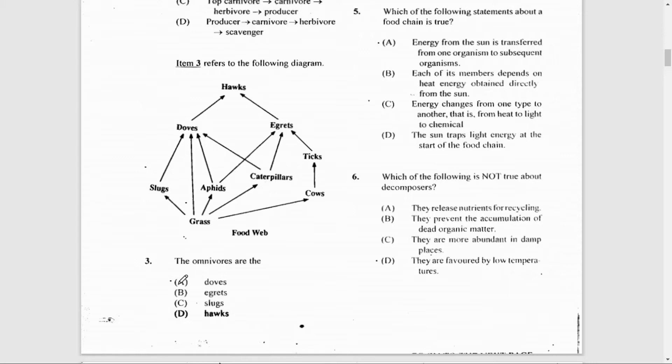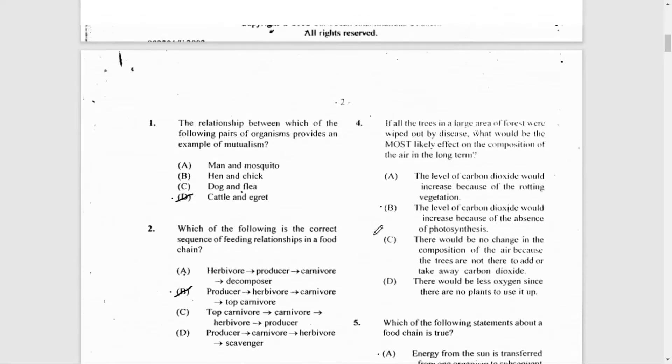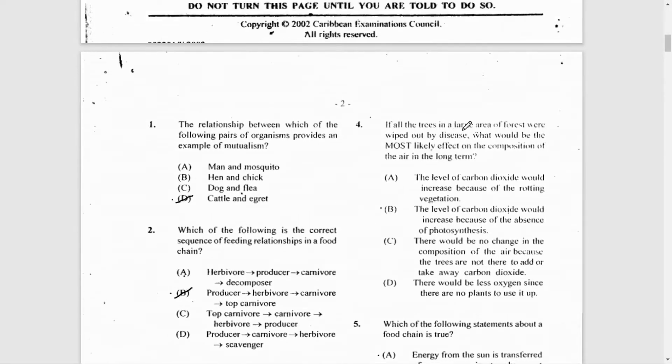Number 4: If all the trees in a large area of forest were wiped out by disease, what would be the most likely effect on the composition of the air in the long term? If all the trees are wiped out, then the level of carbon dioxide would increase.